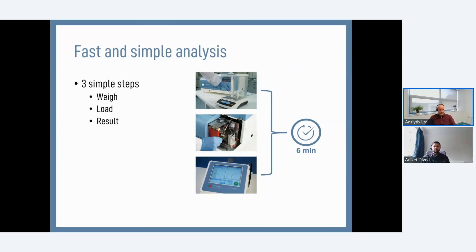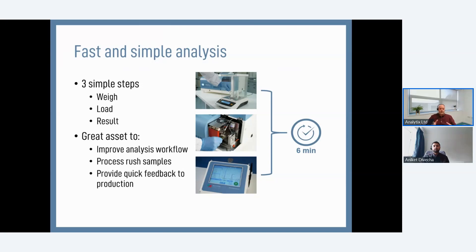In terms of ease of use, it really couldn't be faster or simpler. There are three very simple steps to obtain a mercury result. First, weigh the sample into one of our boats — either quartz or metal. Then place the boat into the sample holder and press go. From there, the system automatically closes the chamber, seals it, and begins to run the method — drying, decomposing, amalgamation, and subsequent detection all done automatically — all of this taking less than six minutes.